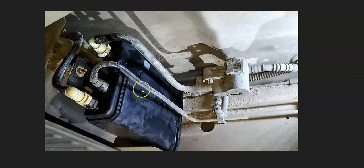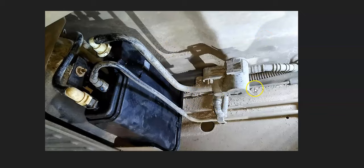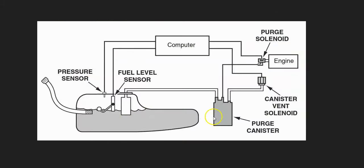If the purge valve and hoses all look good, the next thing to do is locate the charcoal canister, which is underneath the vehicle by the gas tank, and check the vent valve solenoid. Make sure everything looks good and is not damaged. There are different tests you can do on the vent valve to verify it's opening and closing properly.